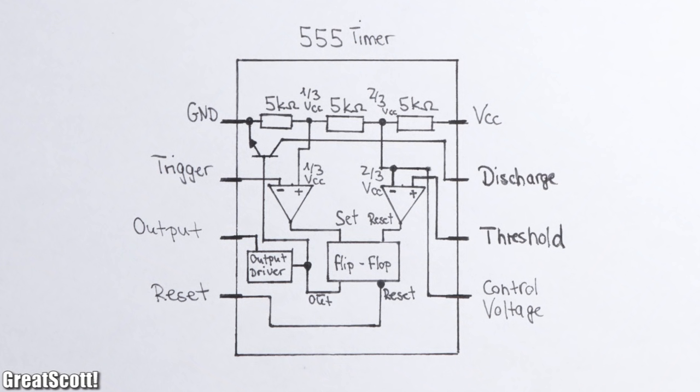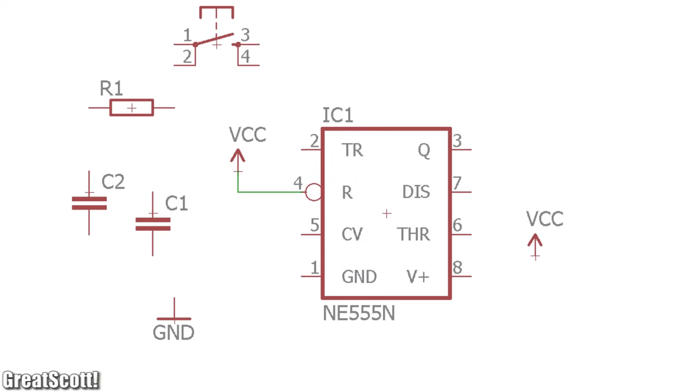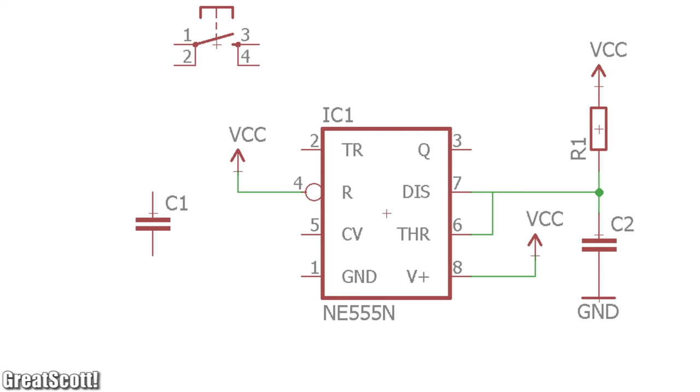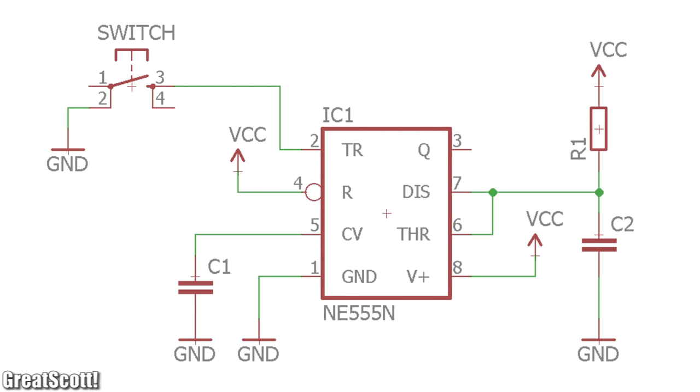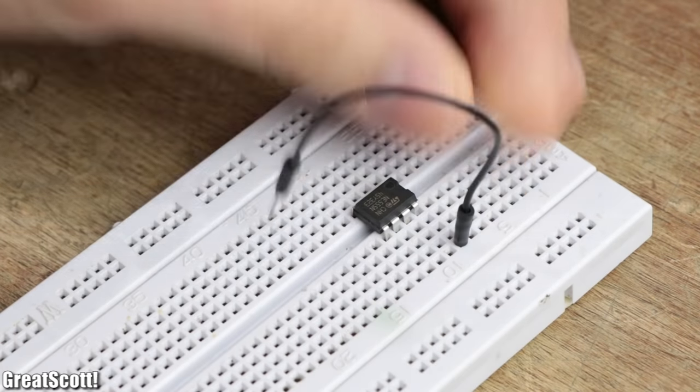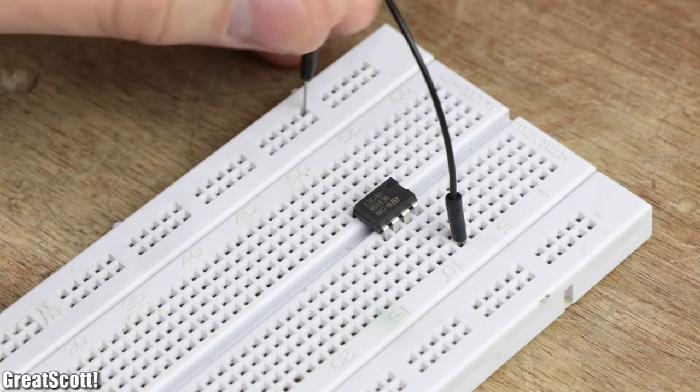And that basically makes up a 555 timer. But in order to understand it a bit better, let's have a look at a practical example circuits. To be more specific, a monostable multivibrator configuration.